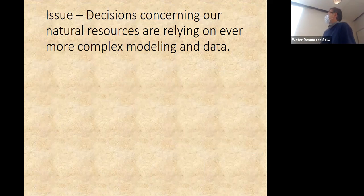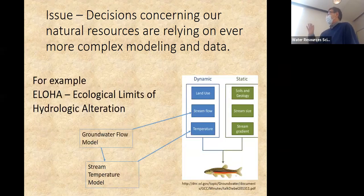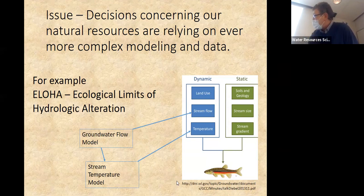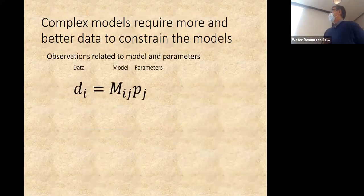What's driving all of this work is decisions concerning our natural resources. We're doing more modeling — it's more complex, more interwoven — and we need data to support those models. Here's an example: ALOHA — Ecological Limits of Hydrologic Alteration. We may be worried about this little red belly dace, and we may do a groundwater flow model that tells us something about stream temperature, which feeds into a model telling us whether the dace will exist in 2050 as things warm up.